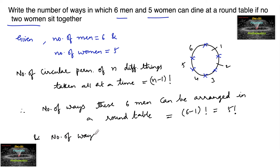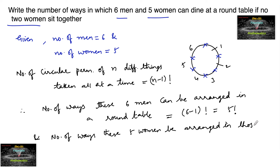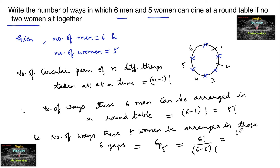The number of ways these five women can be arranged in those six gaps — the six gaps between the men — is taken as 6P5, the number of permutations of six different things taking five at a time. This is equal to 6P5, which equals 6 factorial divided by (6 minus 5) factorial, that is 6 factorial divided by 1 factorial, which equals 6 factorial.